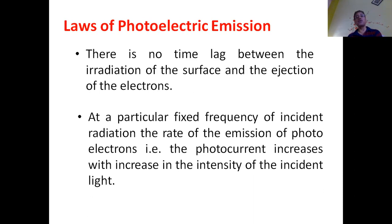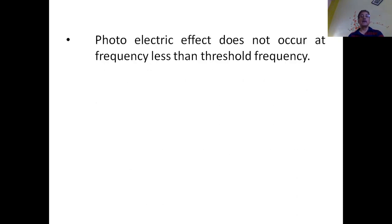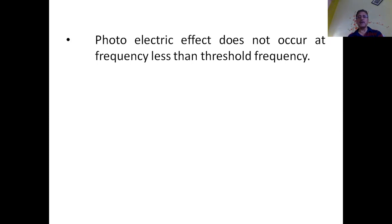The second law of photoelectric emission states that at a fixed frequency, the rate of emission of photoelectrons — the photocurrent — increases with increase in the intensity of the incident radiation. The third law states that the photoelectric effect does not occur at frequencies below the threshold frequency. Every metal has a work function corresponding to a threshold frequency, and the frequency of the incident radiation must be greater than this threshold.